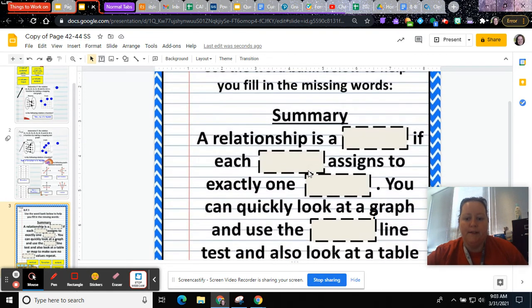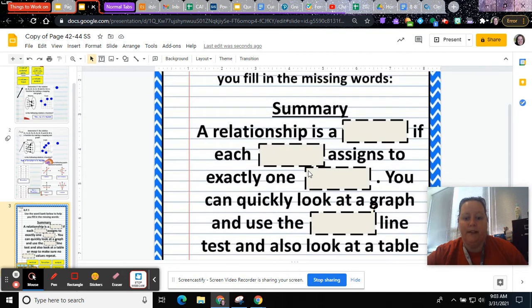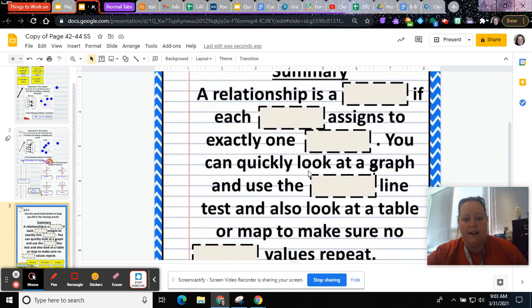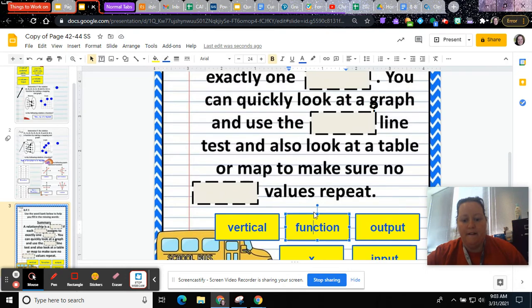a relationship is a blank if each blank assigns to exactly one blank. Okay, a relationship is a function.